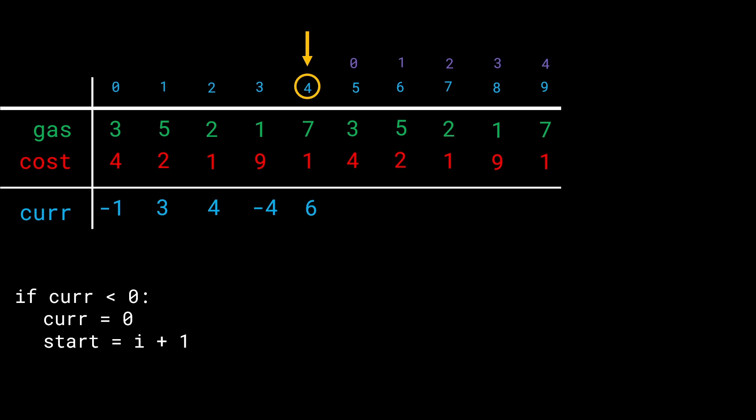We now start from index 4 with gas 7, cost 1: current = +6. Moving forward with the doubled array — index 5 is station 0 — we have 6 units. We do 6 + 3 - 4 = 5. Notice that indices 5, 6, 7, 8 are copies of indices 0, 1, 2, 3, 4. We simply iterate over the doubled array and apply the same logic.